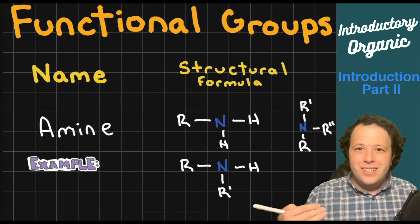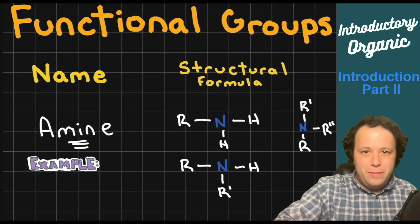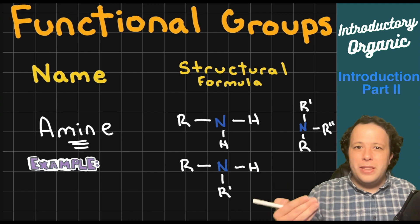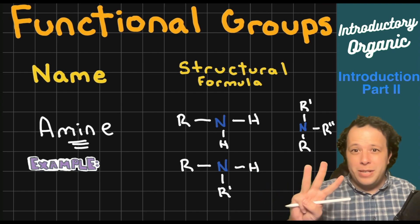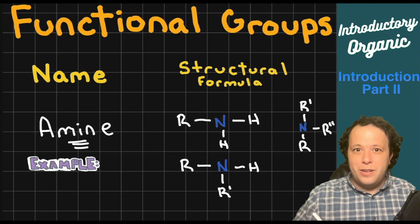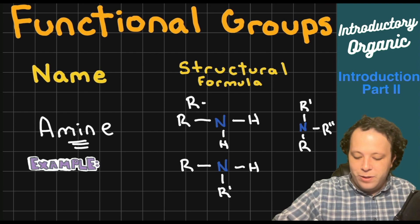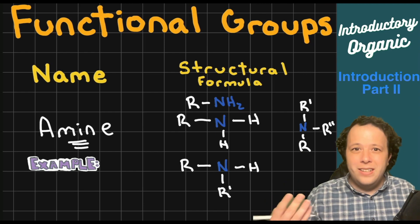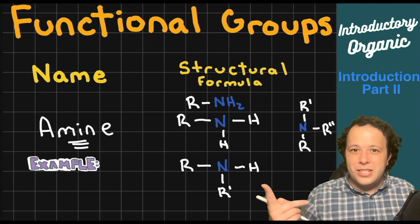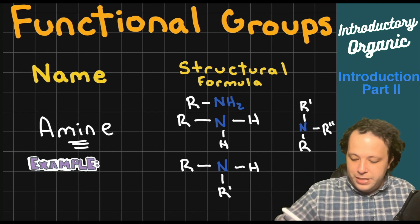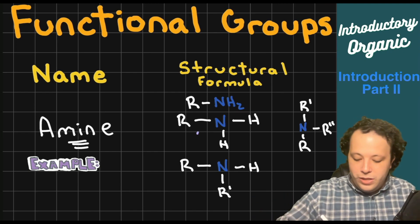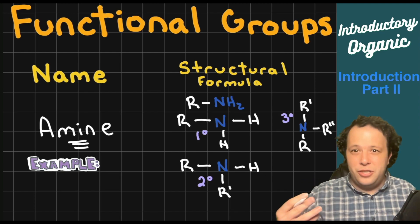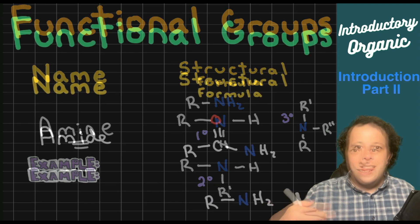The next group is amines. Think of the word 'minimum' — amines have the minimum number of attachments compared to amides. The key feature of amines is nitrogen, which can form up to three bonds. A primary amine is written as R–NH₂ with only one R group attached. A secondary amine has two R groups, and a tertiary amine has three — primary, secondary, and tertiary refer to how many carbons the nitrogen is attached to.